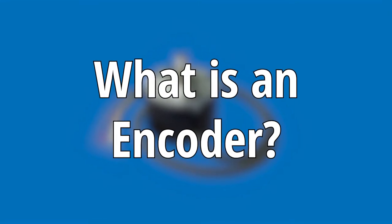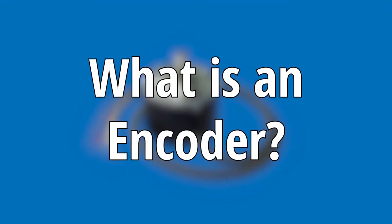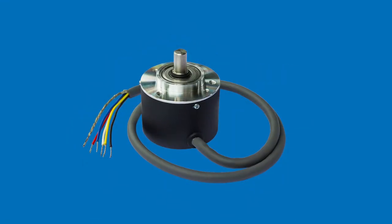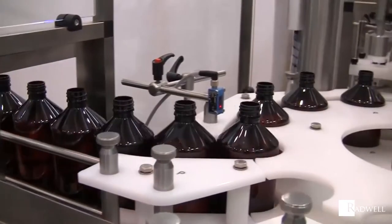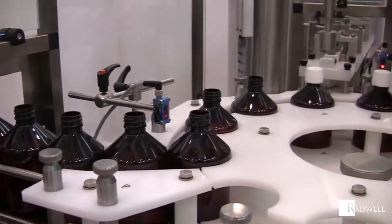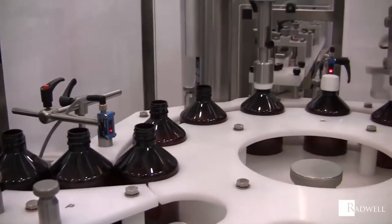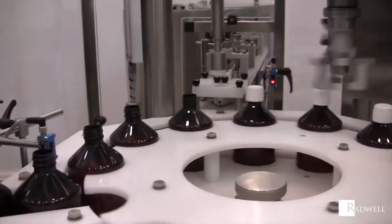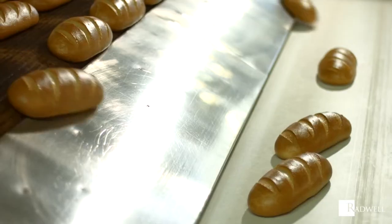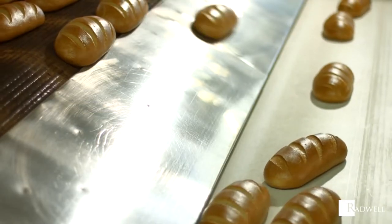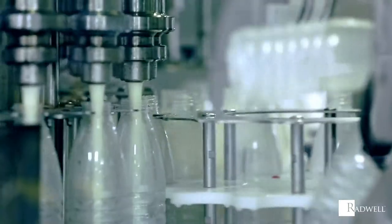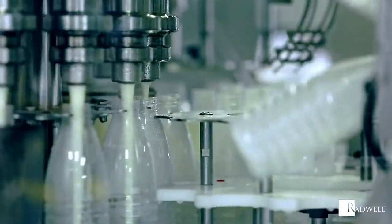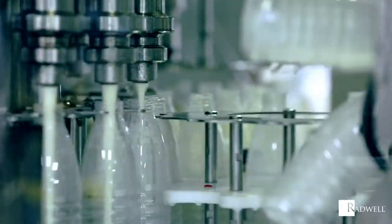What is an encoder? An encoder is a device, circuit, transducer, software program, or algorithm that converts information from one format or code to another for the purpose of determining position, speed, or direction.